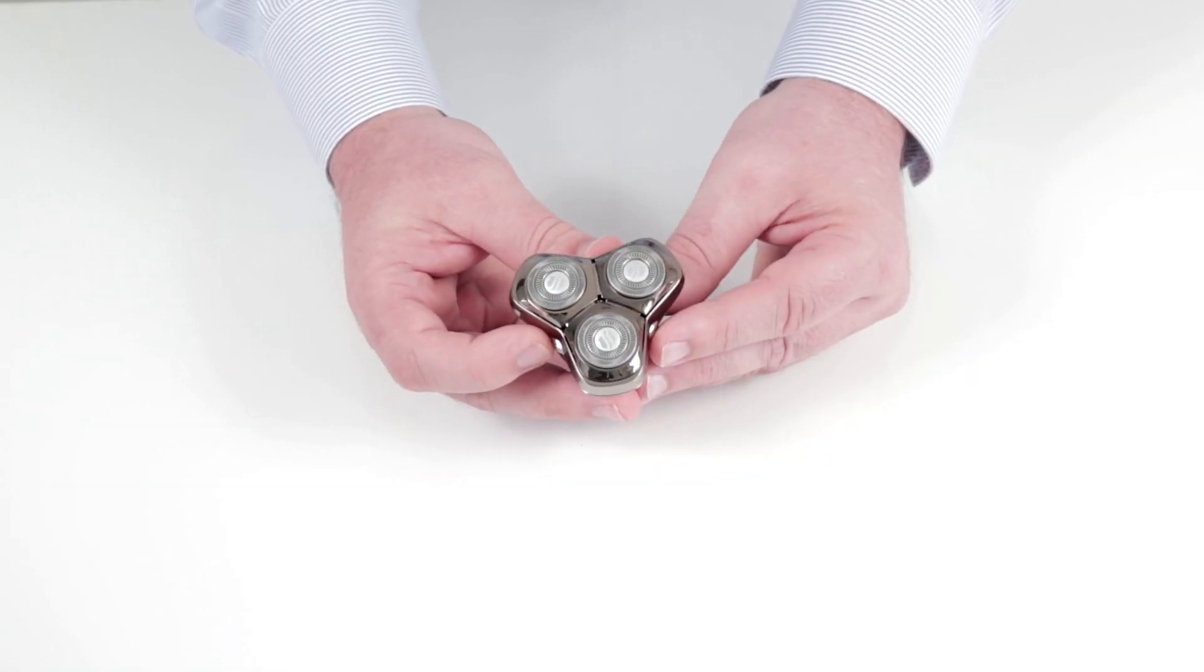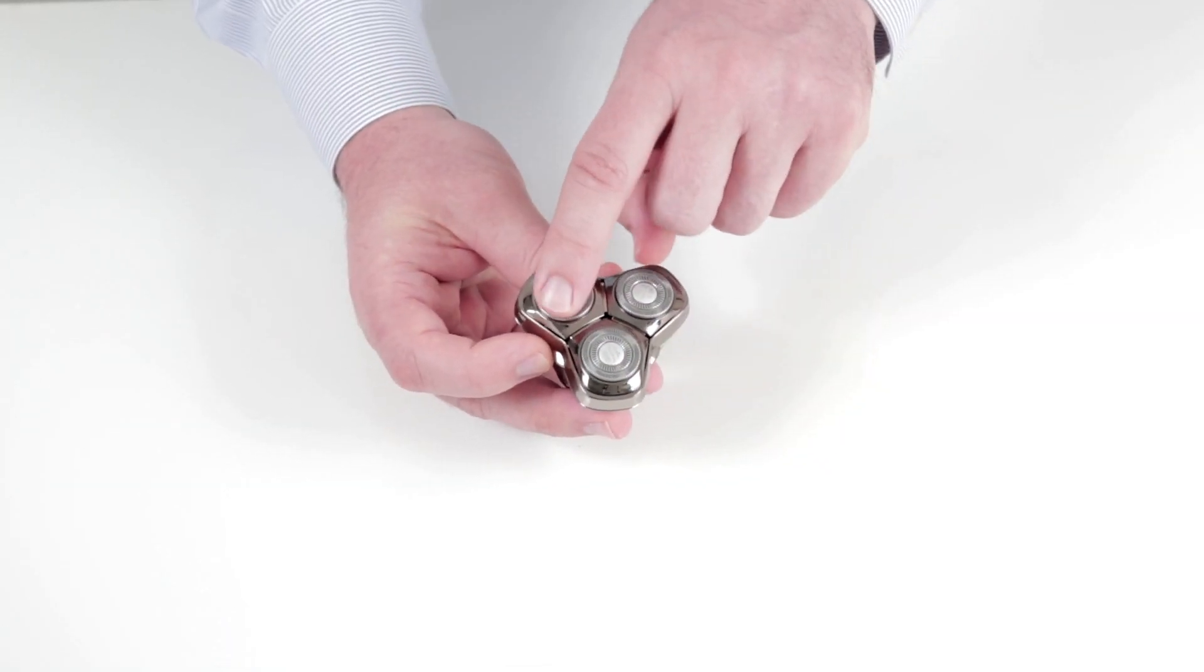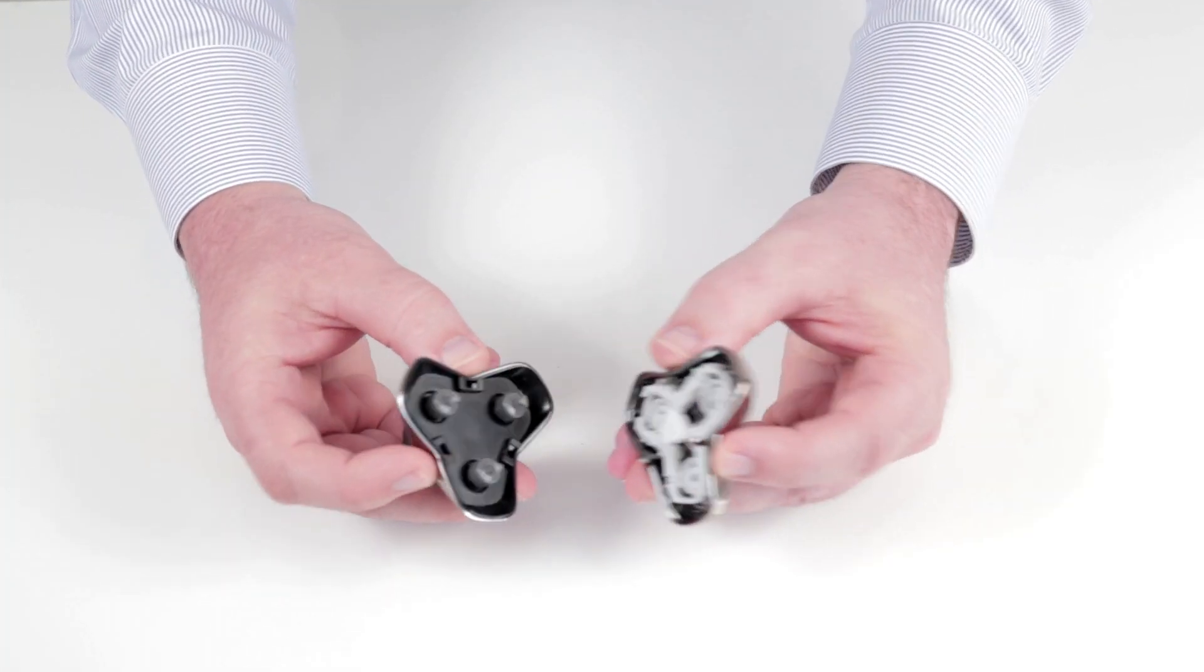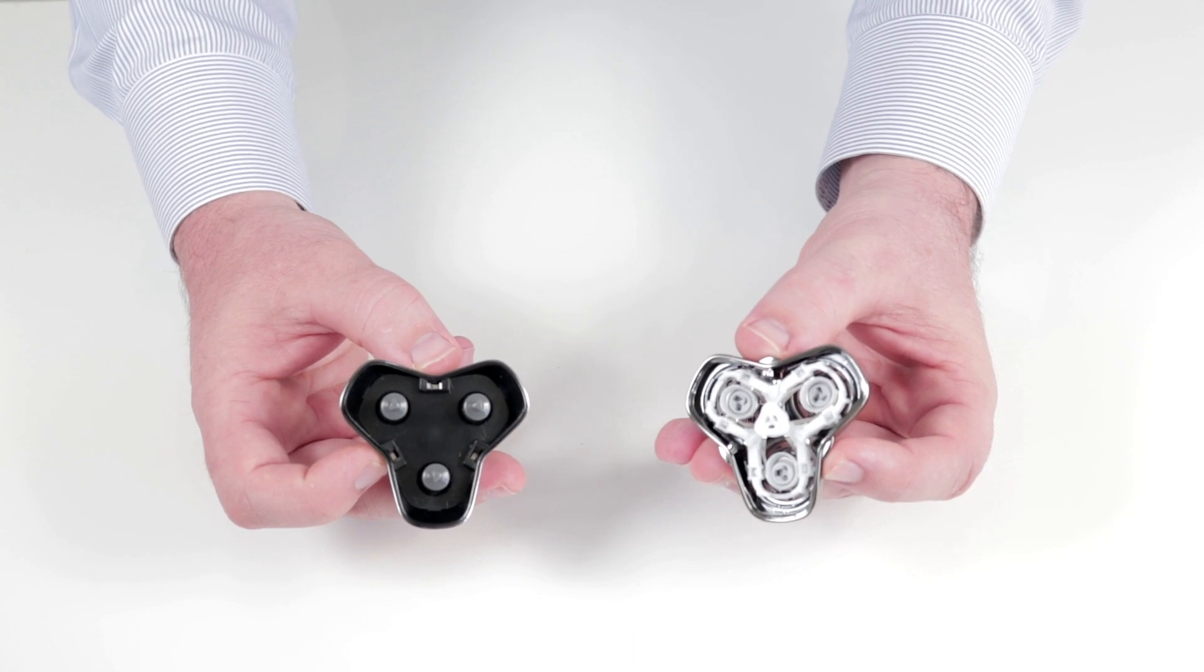The CR3 blade has three heads that pivot and flex to contour your face or head. To clean your CR3 blade, separate the blades and just rinse under water.